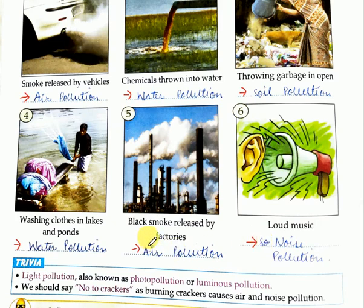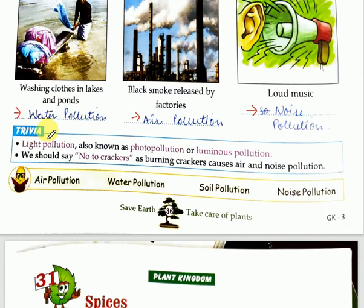One more thing children — in the trivia, very important information is given. Light pollution is also known as photo pollution or luminous pollution. And now Diwali is coming, and you know that the pollution level is very high.